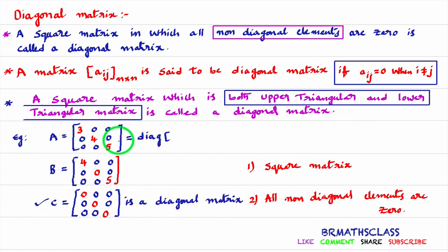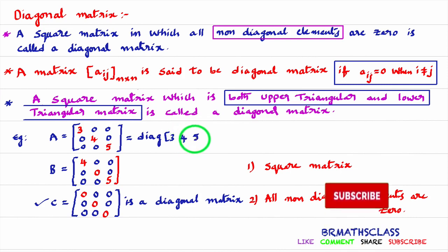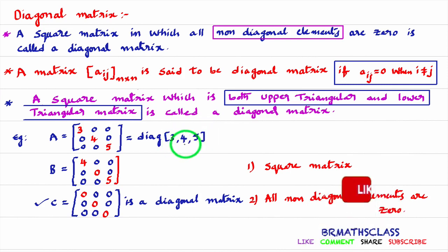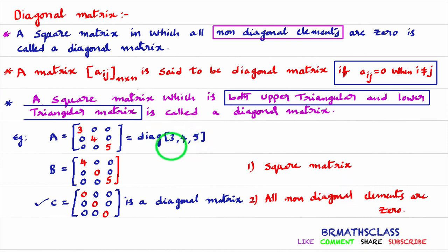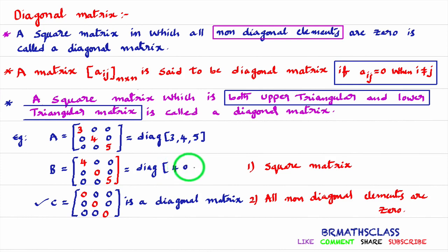A diagonal matrix is also denoted using the notation diag(). 'diag' represents diagonal. So if diagonal elements are 3, 4, 5, we write it as diag(3, 4, 5) — this indicates that diagonal elements are 3, 4, 5 and all other elements are 0. Similarly, another matrix can be written as diag(4, 0, 5), meaning diagonal elements are 4, 0, 5, and all other non-diagonal elements are 0.